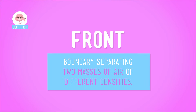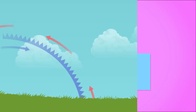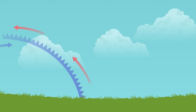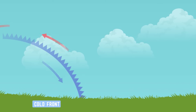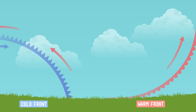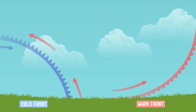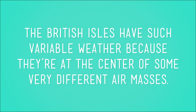Now, if the jet stream is sitting right on top of the isles, that's when you get some interesting weather systems. Because when two masses of air, each with different temperature and pressure, meet, they don't mix — they clash. This is called a front. When a mass of cold air moves into a mass of warm air, it's called a cold front. The warm air is forced to quickly rise, causing heavy rains, hail, thunder, and lightning. A warm front, on the other hand, generally brings clear weather, but some serious humidity.